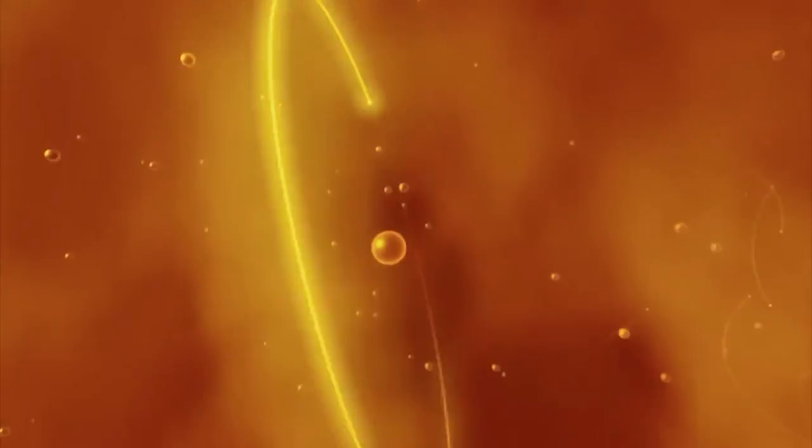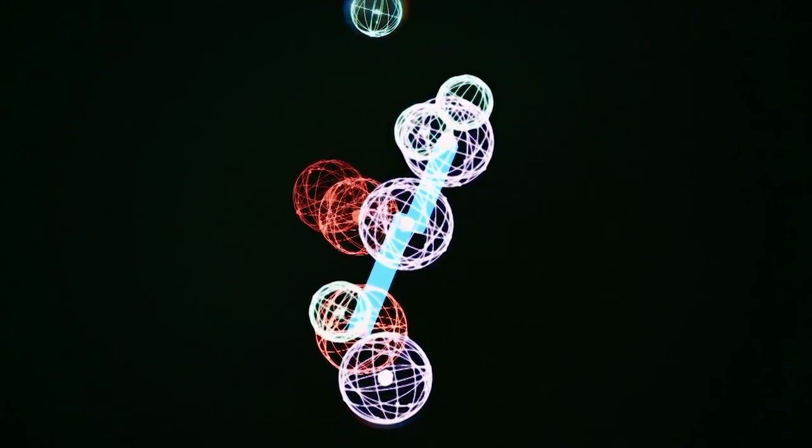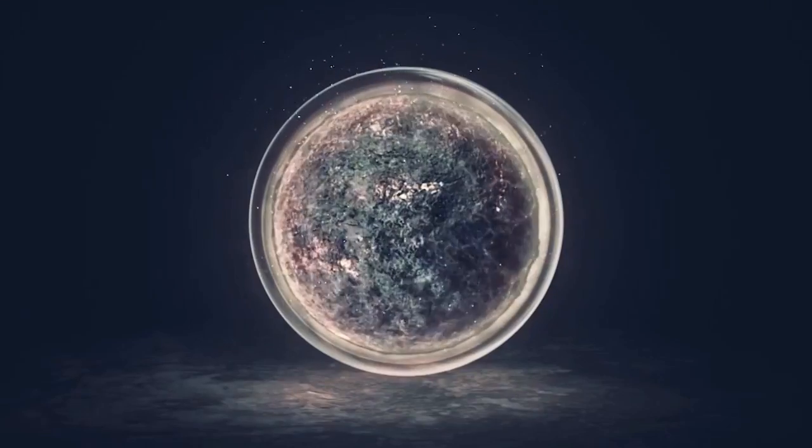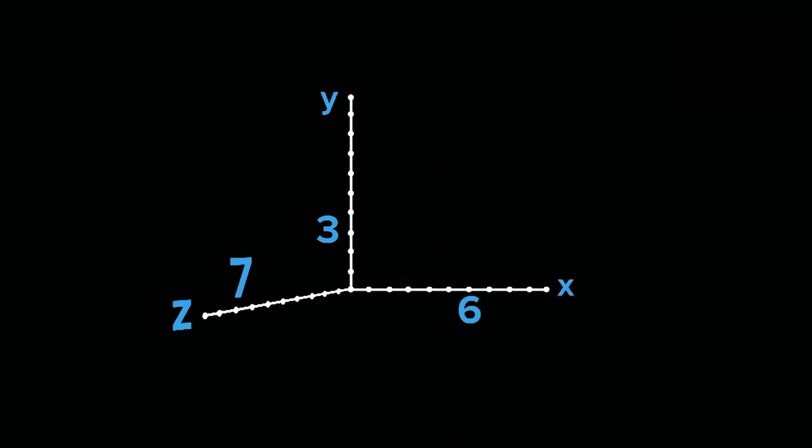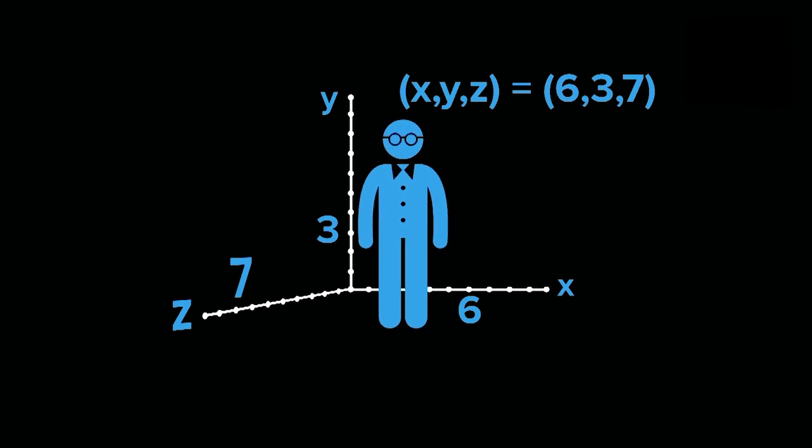The parallel universe idea comes from the string theory in which there are universes just like ours that exist just out of reach of our own universe. There is the possibility of many more dimensions to our world than the three of space and one of time that we understand. In this theory, our three-dimensional universe exists in a larger super-universe with nine spatial dimensions.